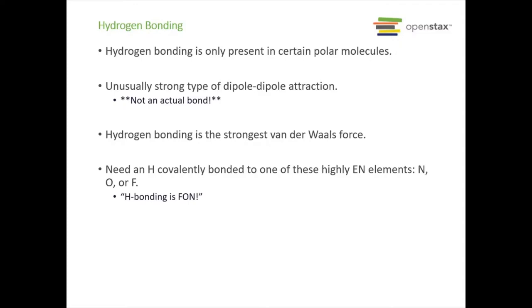The last type of intermolecular force is called hydrogen bonding. This is only present in certain polar molecules. It's a very, very strong type of dipole-dipole attraction, but not an actual bond — it's about 10% the strength of a covalent bond. It's a strong attraction but not strong enough to be an actual bond. It is the strongest van der Waals force.